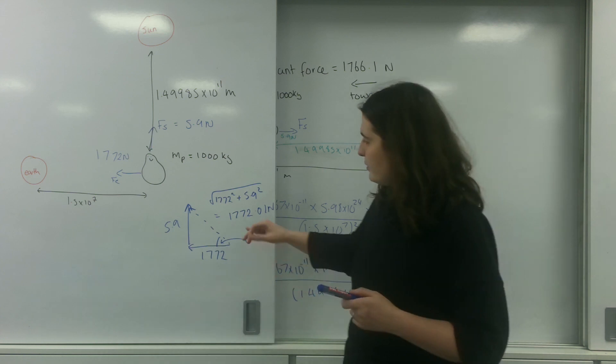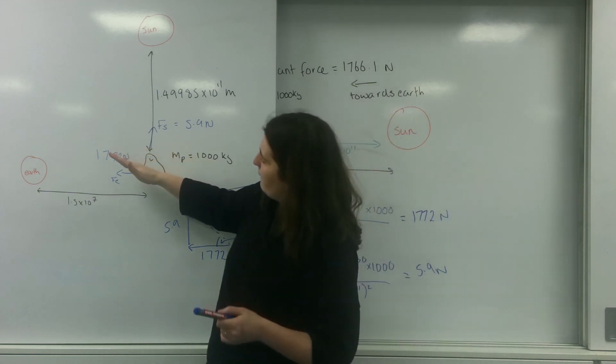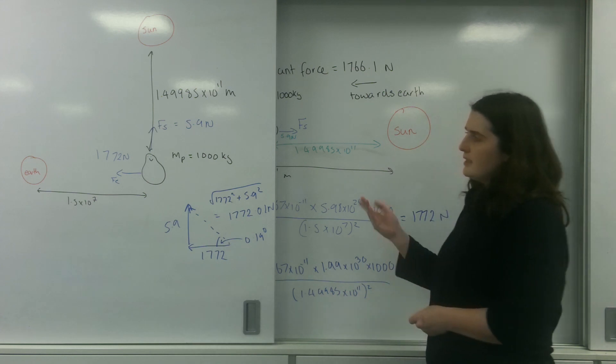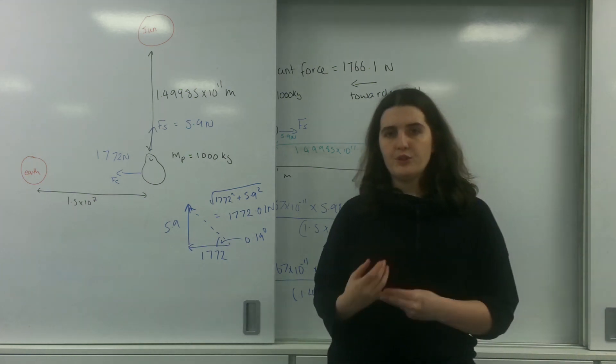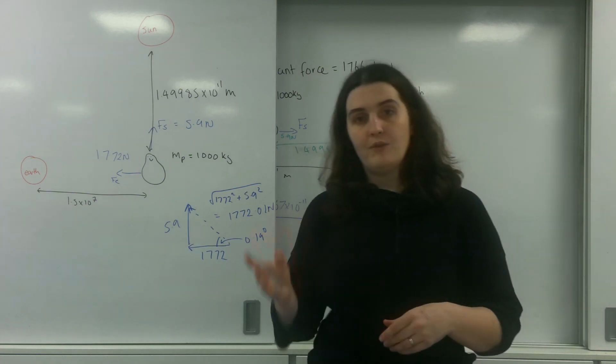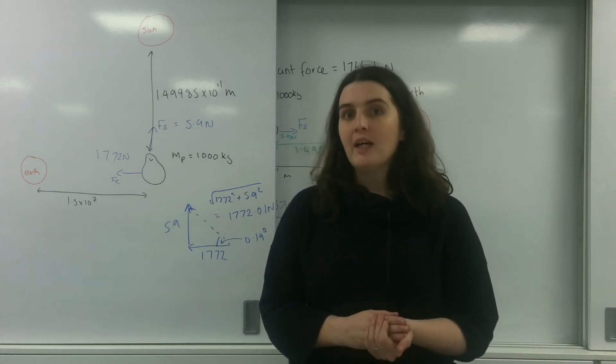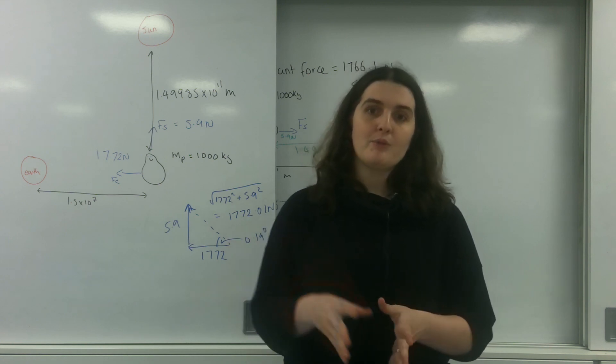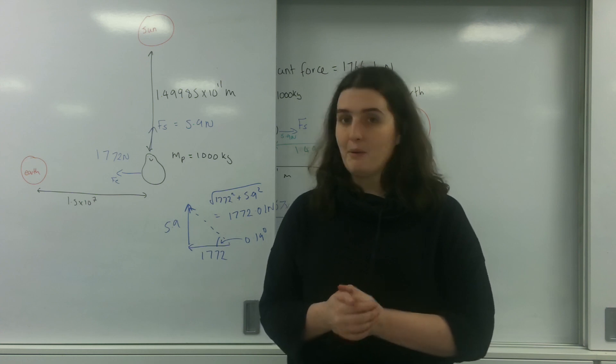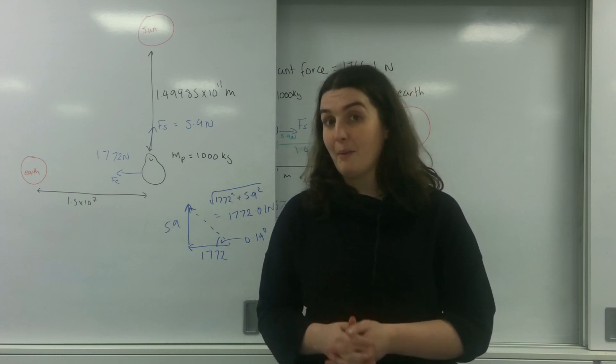So resultantly, I'm going 1772.01 in a very subtle angle here. This is how you find the resultant force. Now from this, in another video, you can work out finding the resultant gravitational field strength. I can do this by finding the resultant force and then dividing that by the mass of the penguin. I'll then be able to find the gravitational field strength at that point.